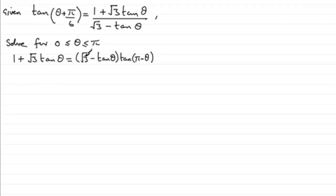So let's divide both sides by root 3 minus tan theta. So if I do that, I've got 1 plus root 3 tan theta, and if I divide that by root 3 minus tan theta, it must leave me with the tan of pi minus theta. But we can see that from up here that this was the equivalent of the tan of theta plus pi upon 6.